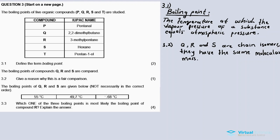3.3: Which one of the three boiling points is most likely the boiling point of compound R? Explain your answer. Let's study the compounds: Q has 2,2-dimethylbutane - on the second carbon in the main chain there are these alkyl groups, methyl groups, so two branches. R has only one branch. S, we don't have any branches - it's hexane.